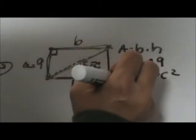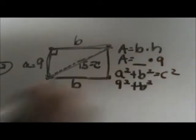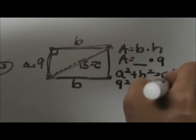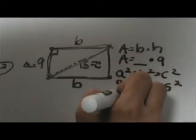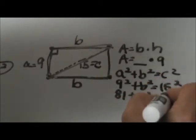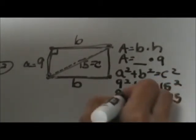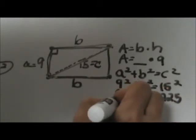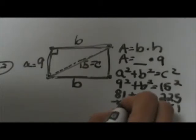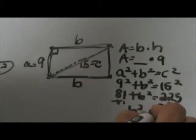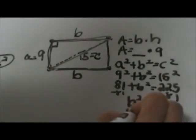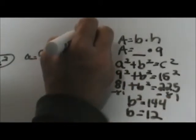Let's plug in: a is 9, b is our unknown so we're going to leave b squared in there, and c is 15 so let's take 15 squared. So 81 plus b squared equals 225. Subtract 81 from both sides and we end up with b squared equals 144. So b must be the square root of 144, which is 12.